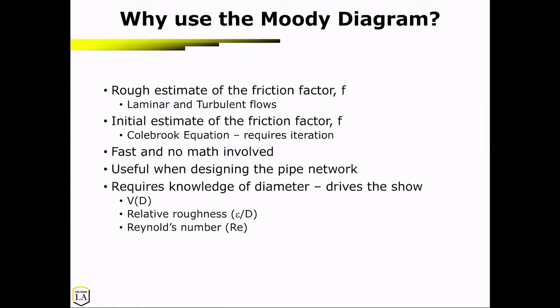It's useful when designing the pipe network. It does require knowledge of the diameter. The diameter essentially drives the show because velocity is a function of diameter, relative roughness is a function of diameter, as well as Reynolds number.